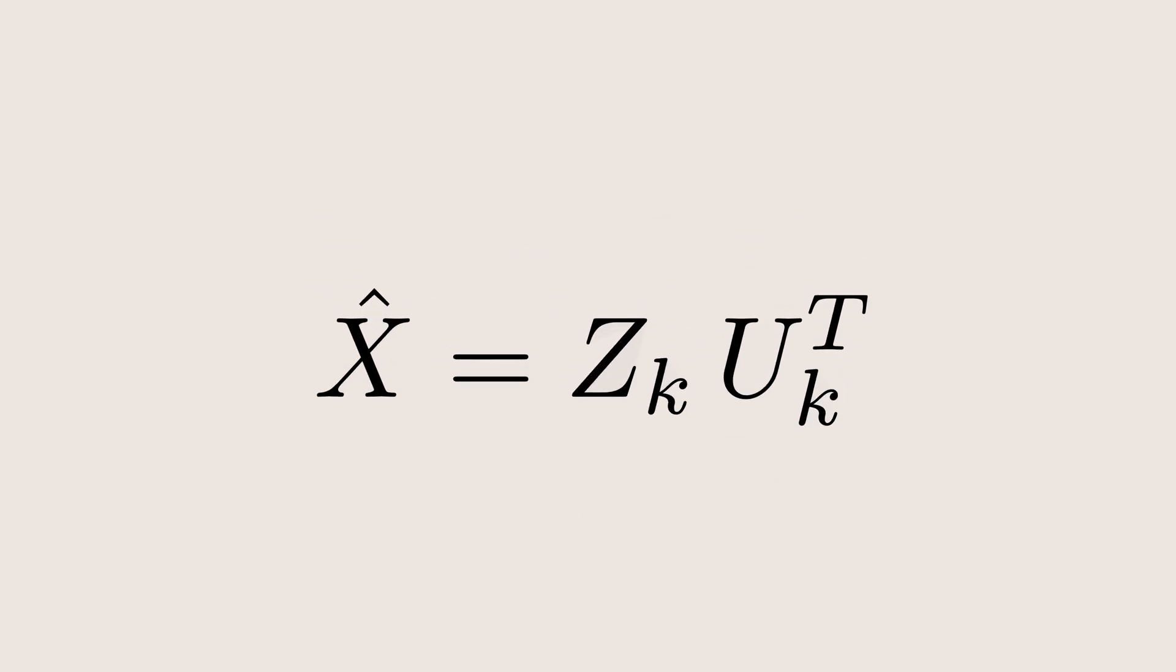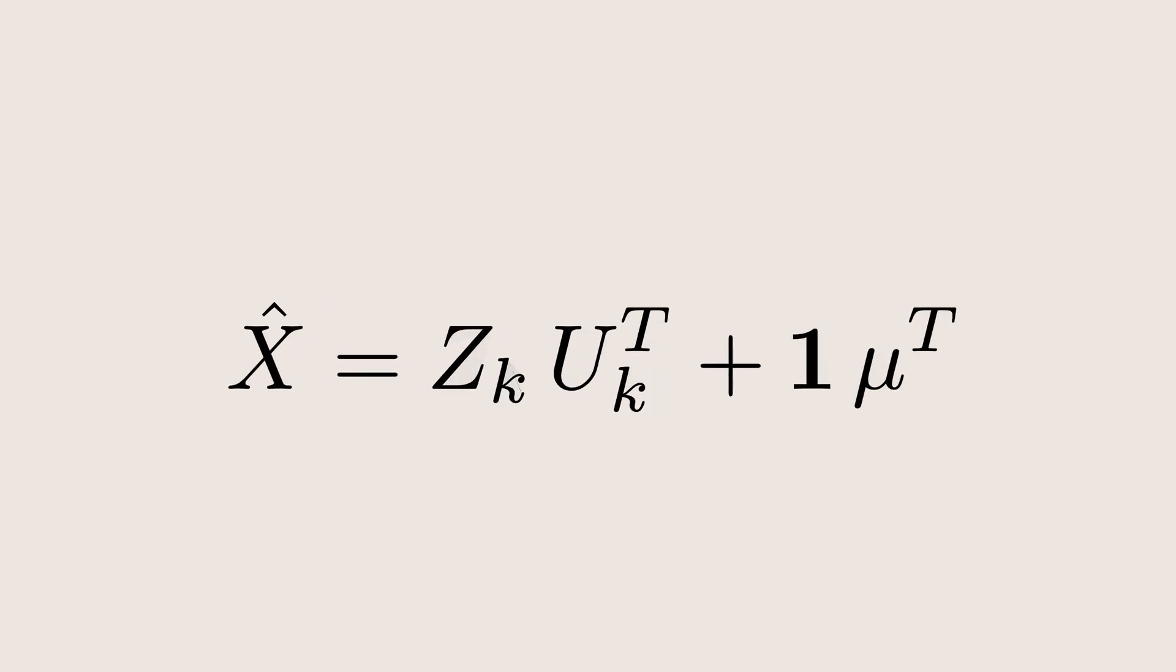Now, if you want to reconstruct the original dataset from these k dimensions, you can do it by multiplying the projected dataset with the transpose of the u-metrics. After that, you also need to add back the mean because we had subtracted it in the very first step. But remember, fully recovering the original d-dimensional dataset from only k dimensions is not possible, since some information was lost during dimensionality reduction.